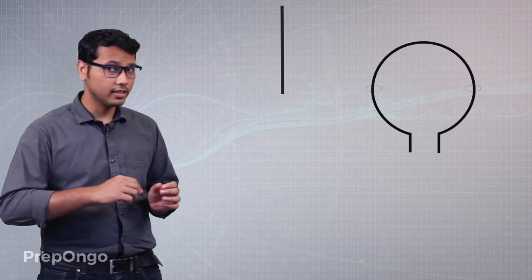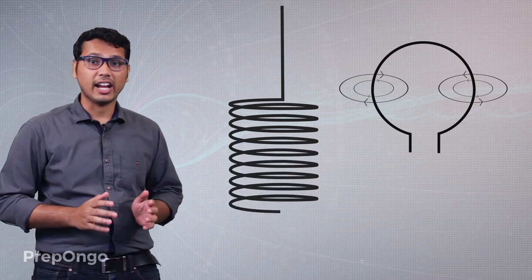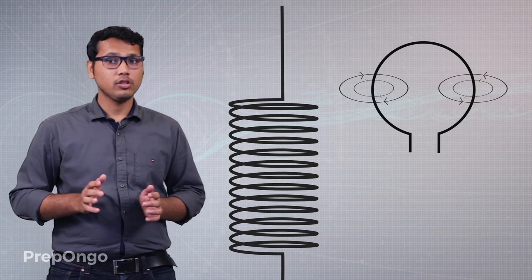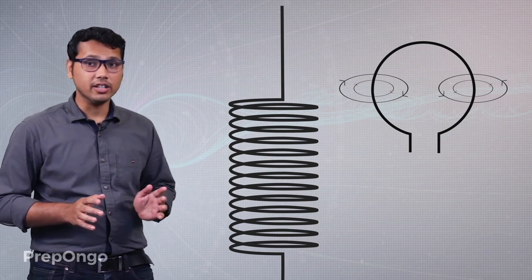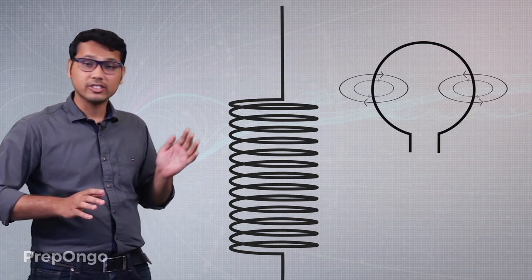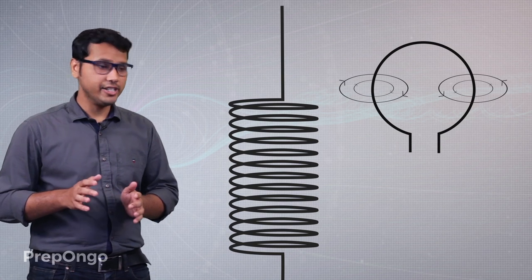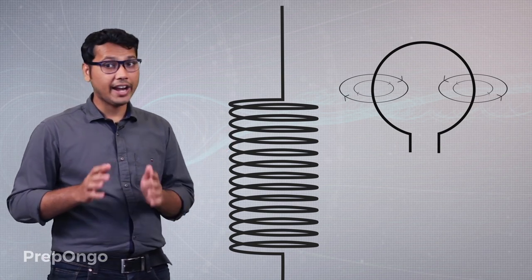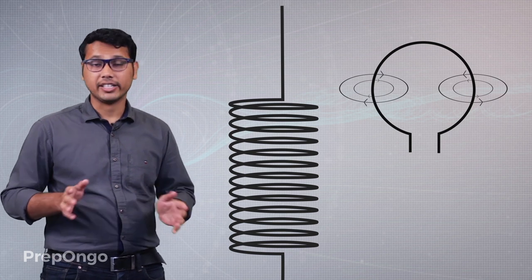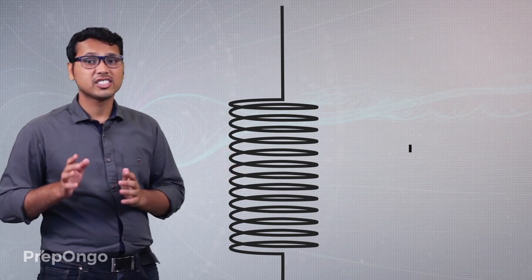Now, if we take a very long wire and instead of making a single circular turn we start making multiple circular turns — one turn, two turns, three turns, four turns, and so on — the magnetic field due to one circular coil will add up to the magnetic field of the second, the third, and so on. All the magnetic fields due to different circular coils will add up to form a very strong magnetic field. This arrangement is known as a solenoid.